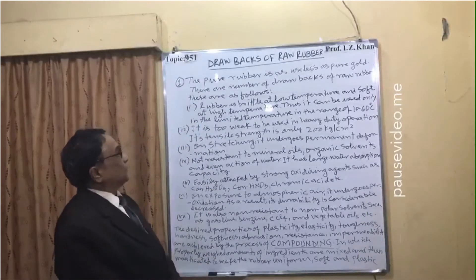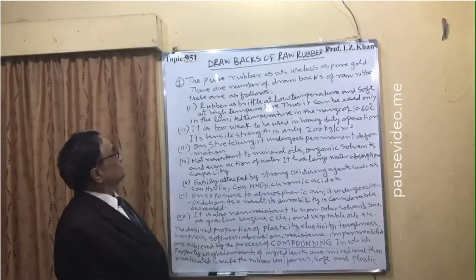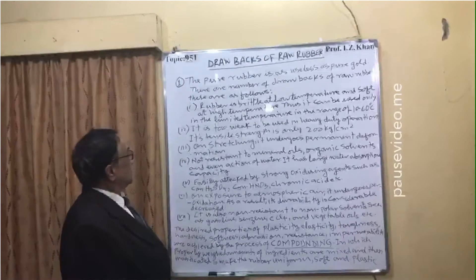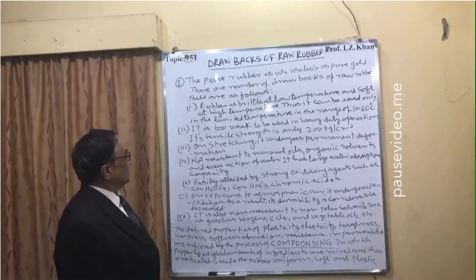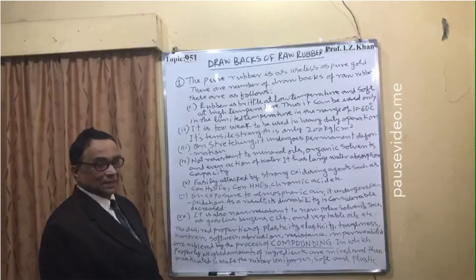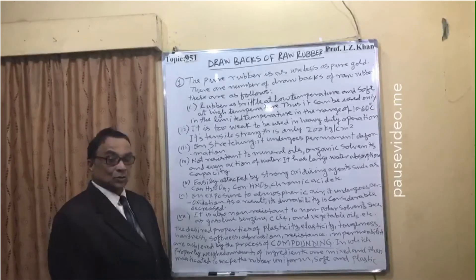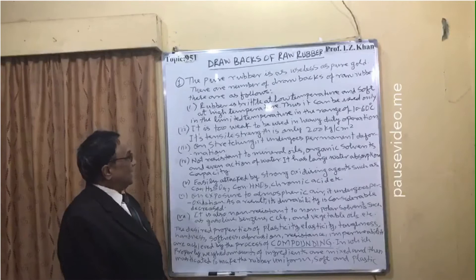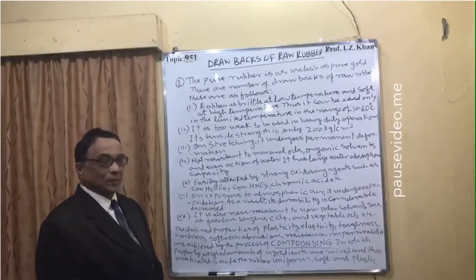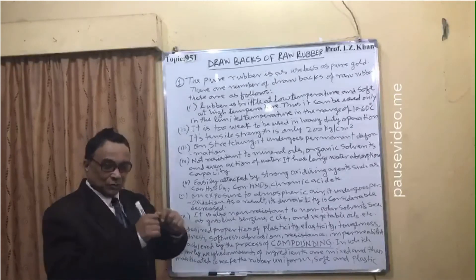Number one: pure rubber is as useless as pure gold. Drawback one: rubber is brittle at low temperature and soft at high temperature, so it can only be used in a limited temperature range of 10°C to 60°C. Drawback two: it cannot be used in heavy duty operations because its tensile strength is only 200 kg per square centimeter.